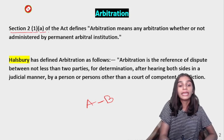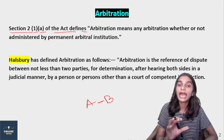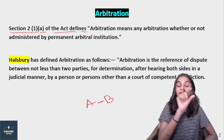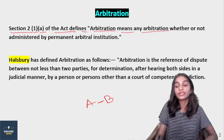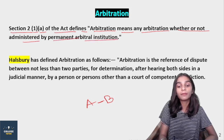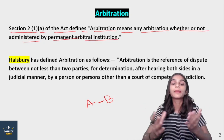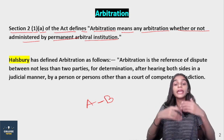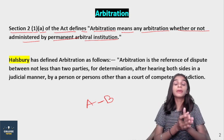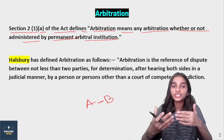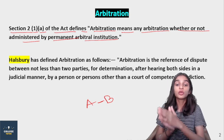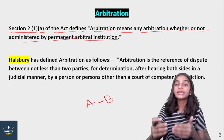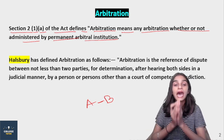Section 2, sub-clause 1(a) of the Arbitration and Conciliation Act defines arbitration. When you look at the Act, in Section 2 sub-clause 1(a), the definition given is: 'arbitration means any arbitration whether or not administered by a permanent arbitral institution.' This means that whether or not a permanent organization with its own set of rules and regulations — a permanent arbitral institution — is administering it, it will still be called arbitration.